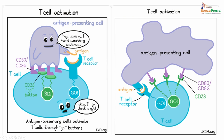The T cell says, okay, I will go and check it out. Therefore, the antigen presenting cells activate the T cells through certain go buttons - that go button is CD28. This antigen presenting cell has got CD80 or CD86 which binds to the CD28. If it is effectively binding to CD28, the immune reaction can happen, that is the T cells can identify the tumor cells. The antigen also has to be presented to the T cell receptor.